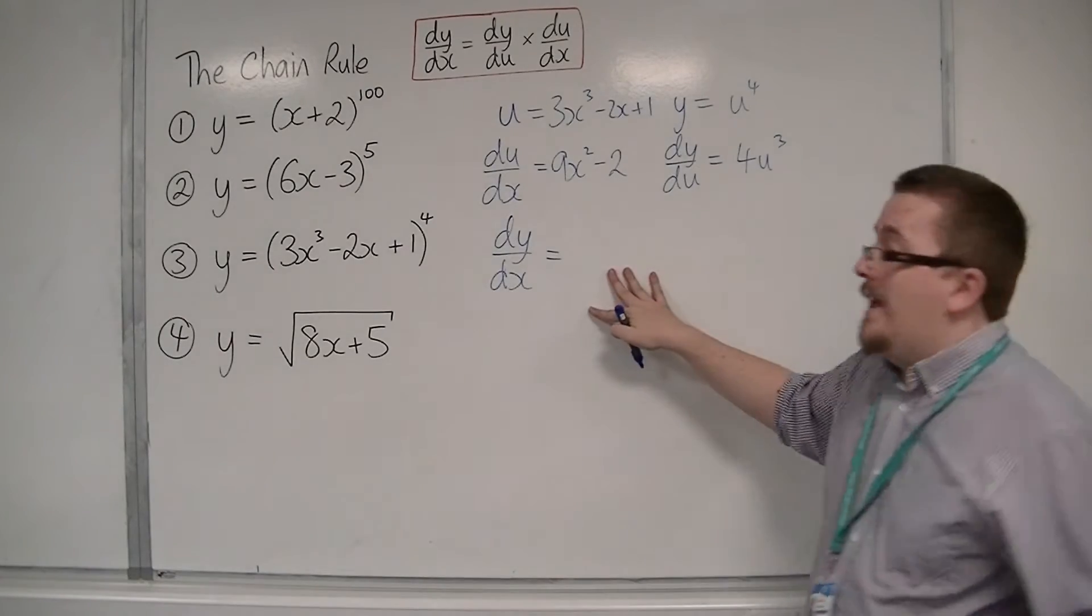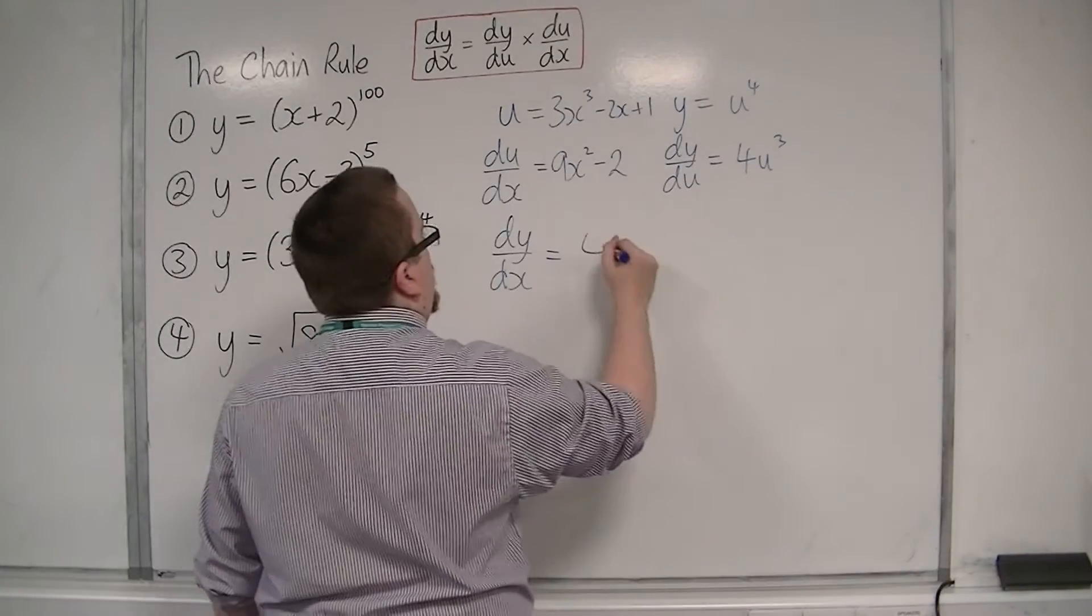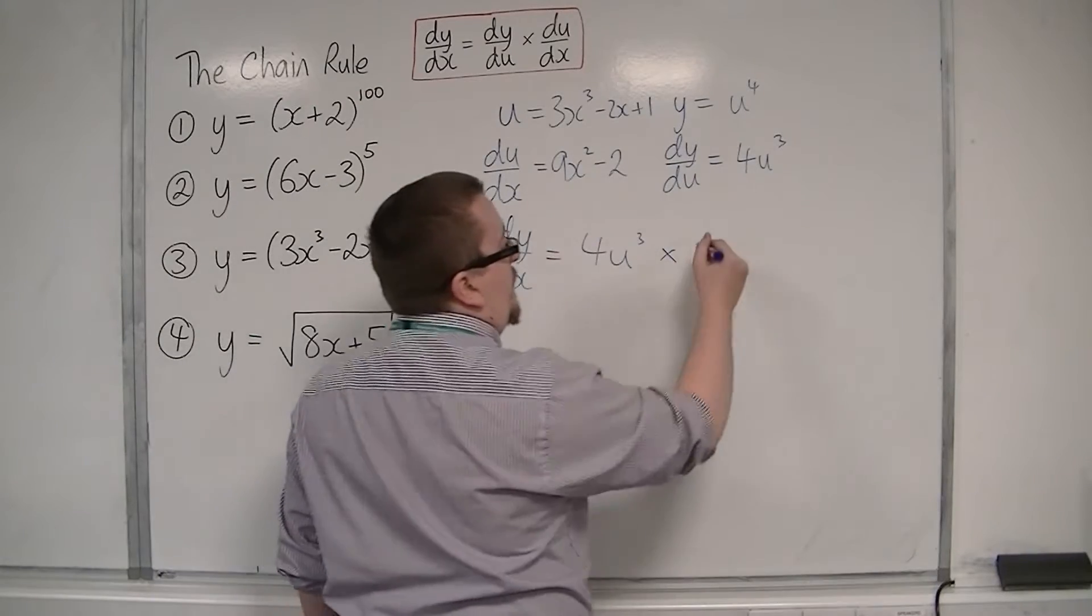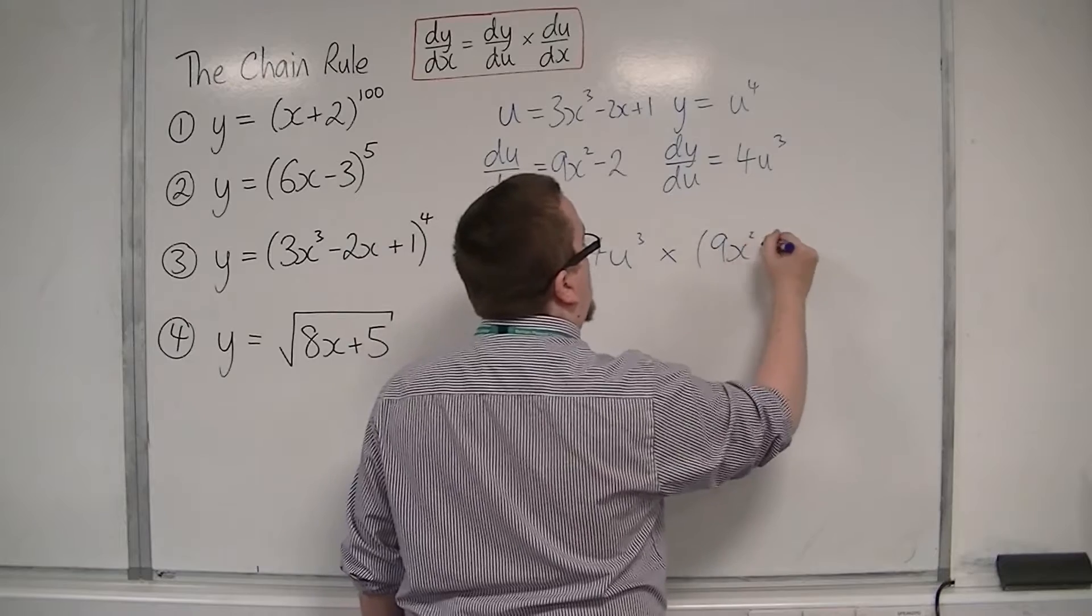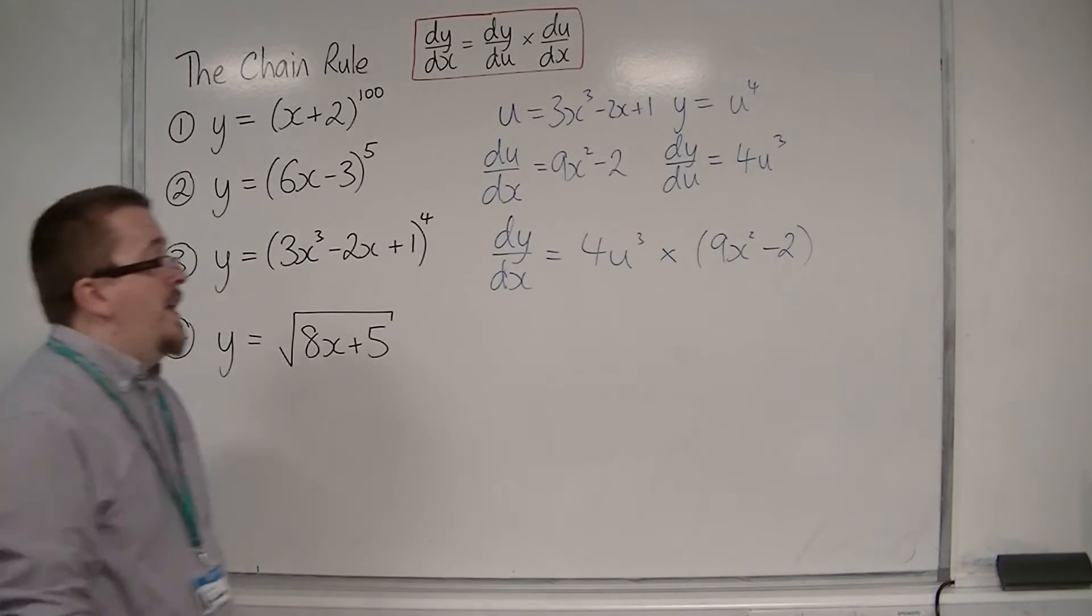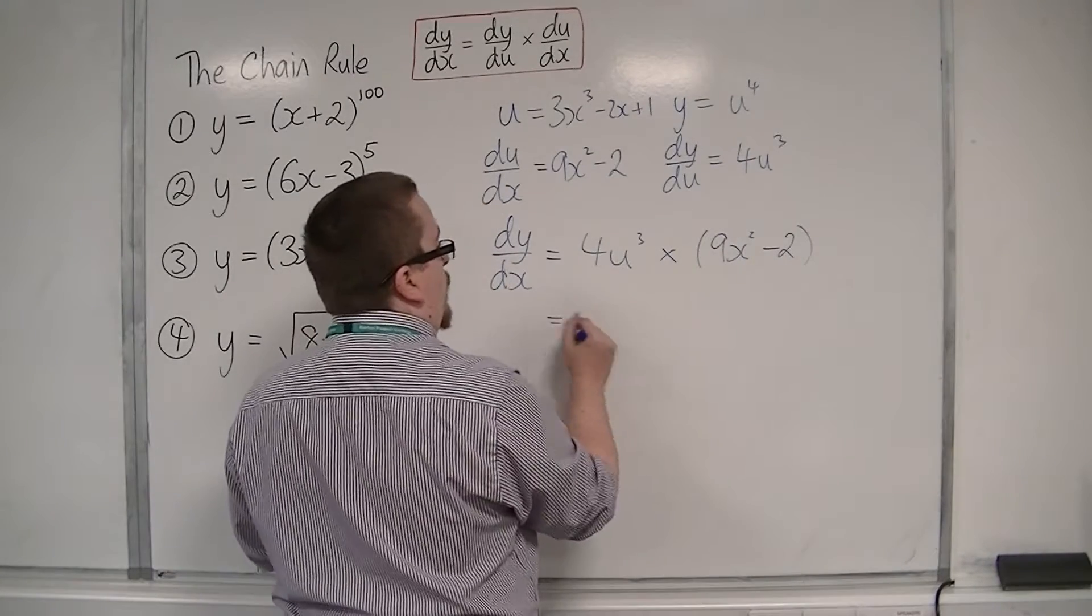So dy by dx is dy by du, 4u cubed, times this 9x squared minus 2. That 9x squared minus 2 should be in a bracket. Then I'm going to multiply through that 4.